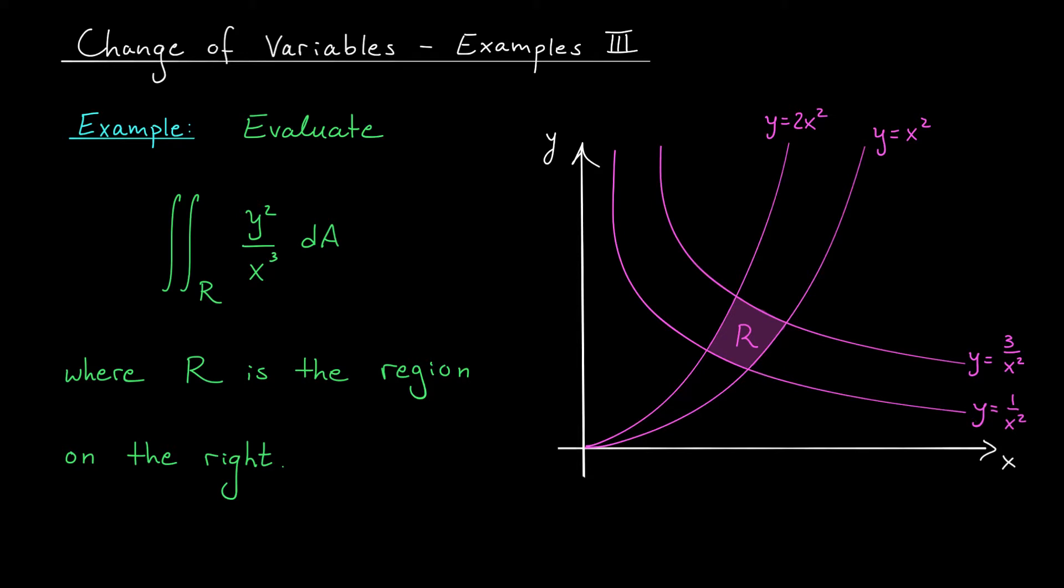We're going to use the same strategy as in the last video. We're going to look for expressions involving x and y that are bounded between constants. We'll then define our new variables, u and v, to be those expressions involving x and y. And that will allow us to transform R into a rectangle.